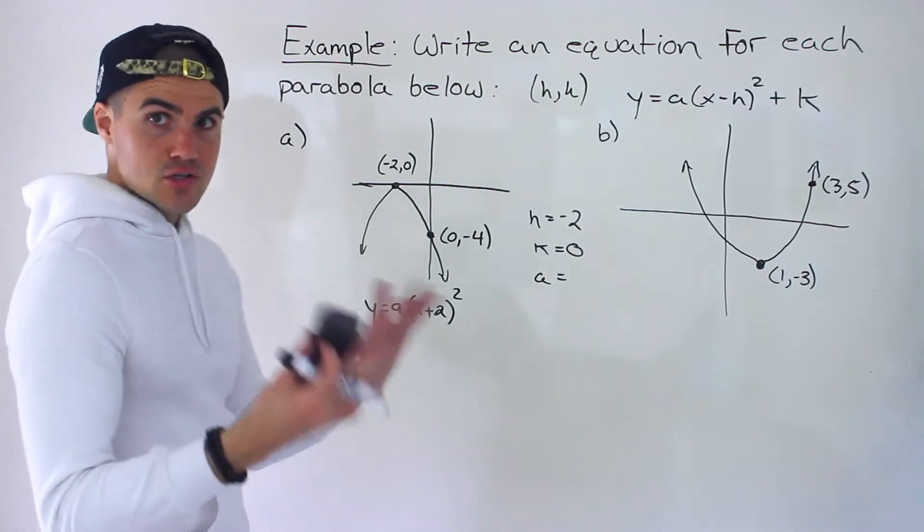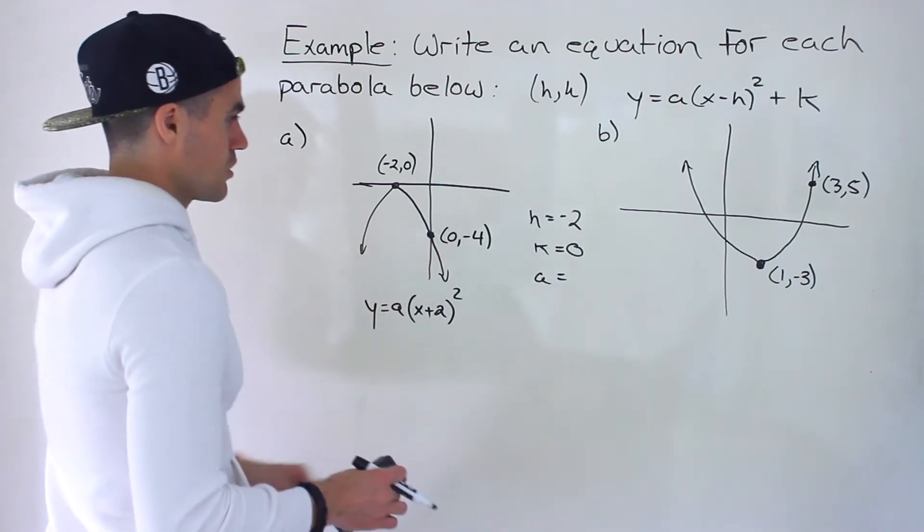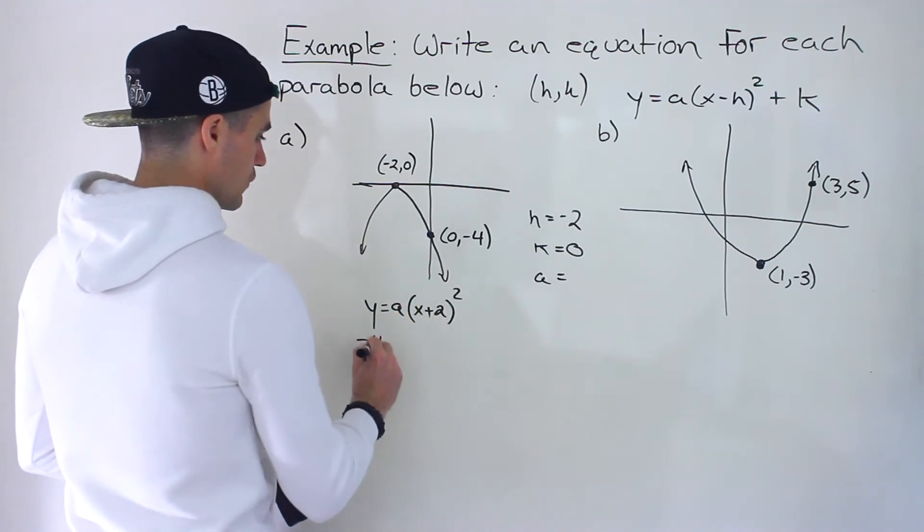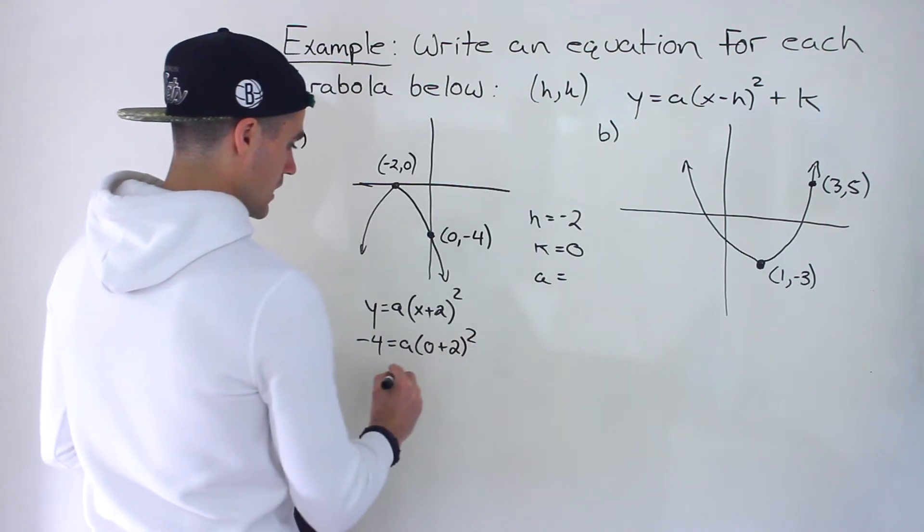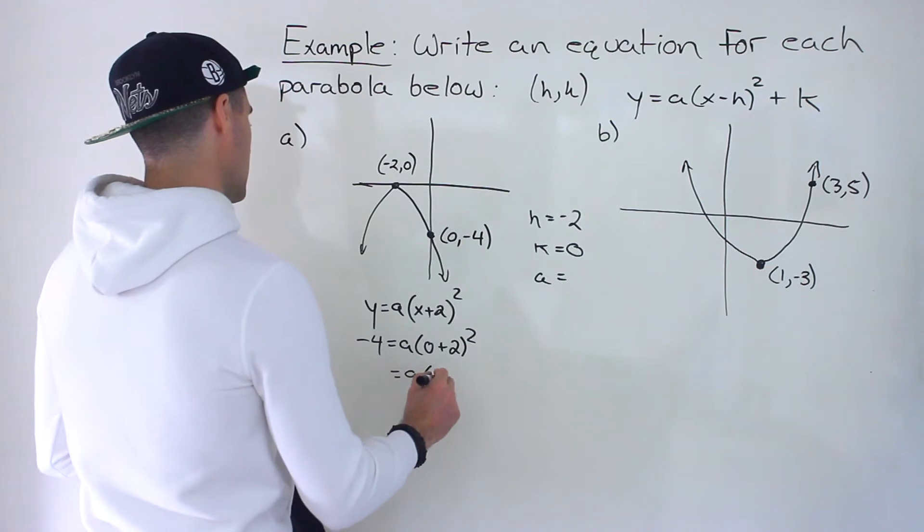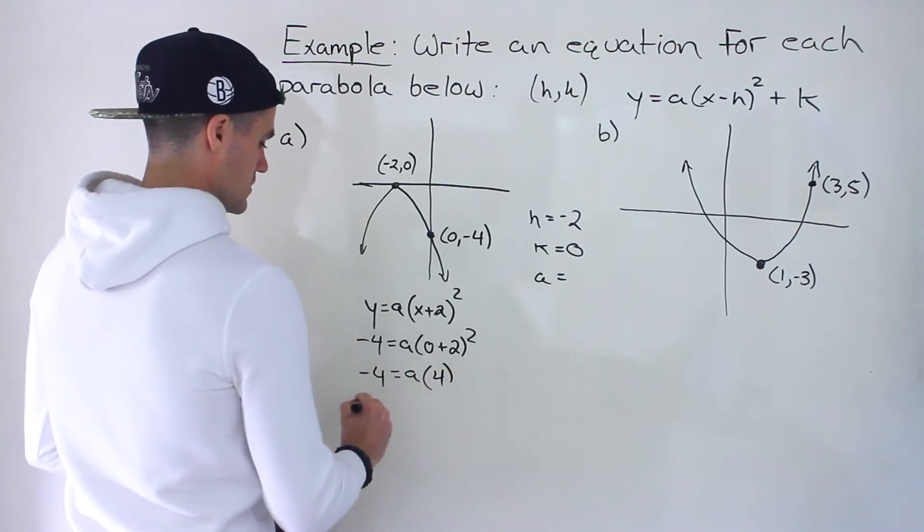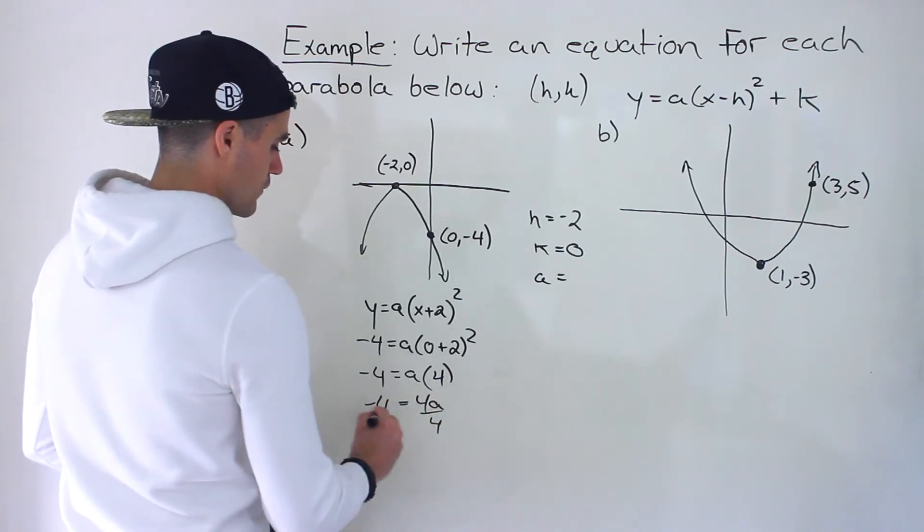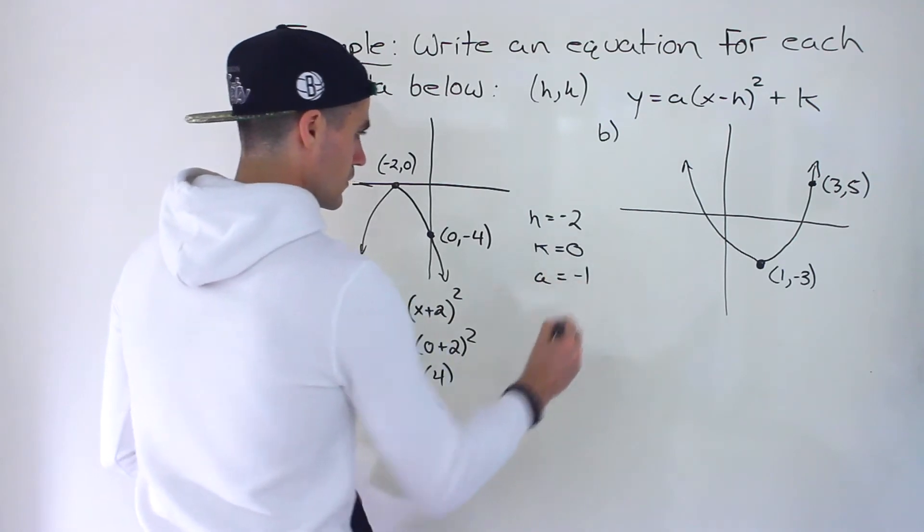All that's left to solve for is the a value. We can use this point. This is actually the y-intercept. So plugging in negative four for y, plugging in zero for x, work with the bracket first. Zero plus two is two to the power of two gives us four. So we end up with negative four equals four a, divide both sides by four. So that a value ends up being negative one.